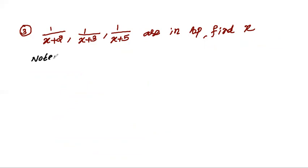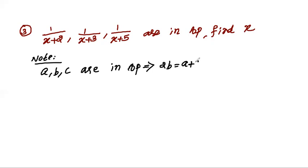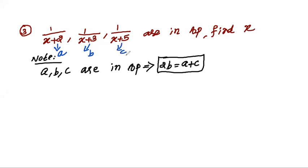We need to note one important point. If A, B, C are three terms said to be in AP, the condition that must be satisfied is 2B equals A plus C. That is, 2 into the middle term equals the sum of the first and third terms. Here, instead of A we have 1 by x plus 2, instead of B we have 1 by x plus 3, and instead of C we have 1 by x plus 5.